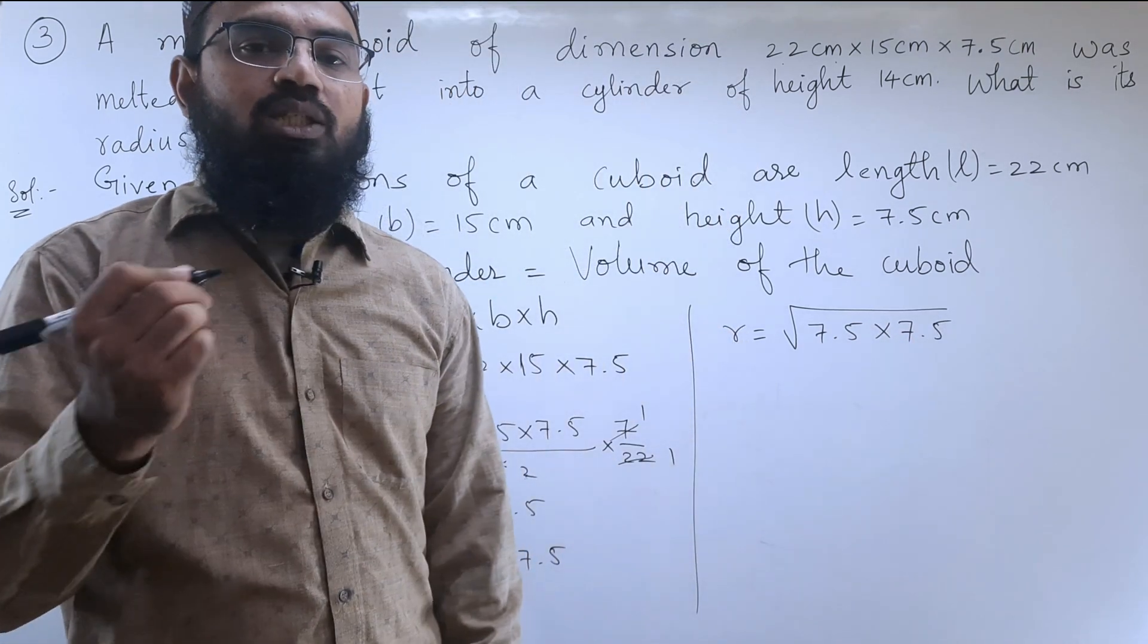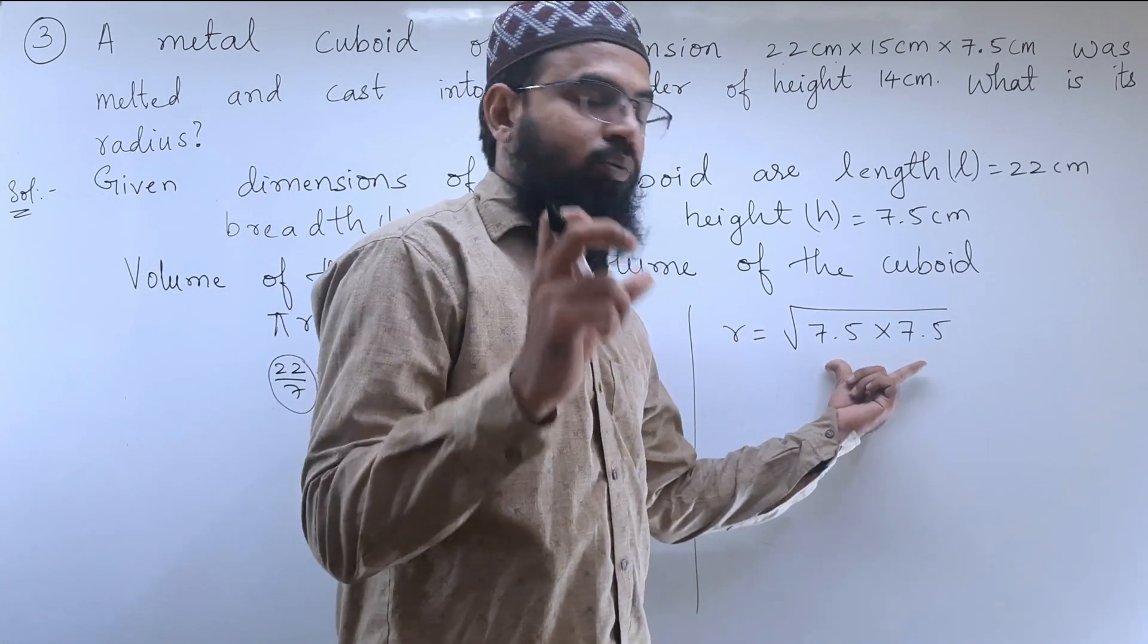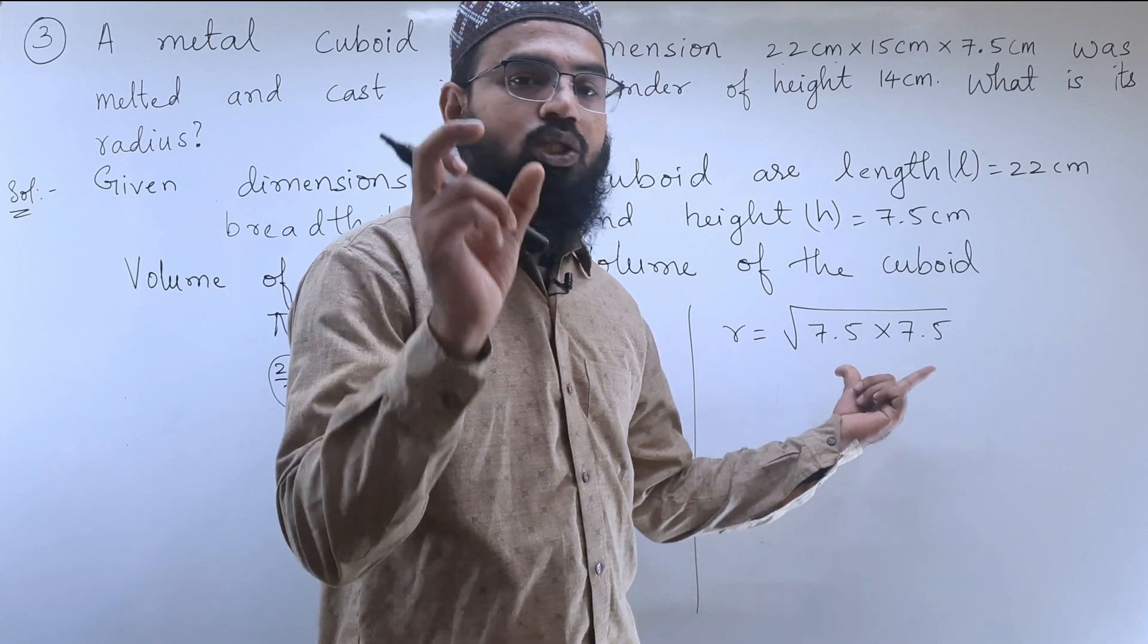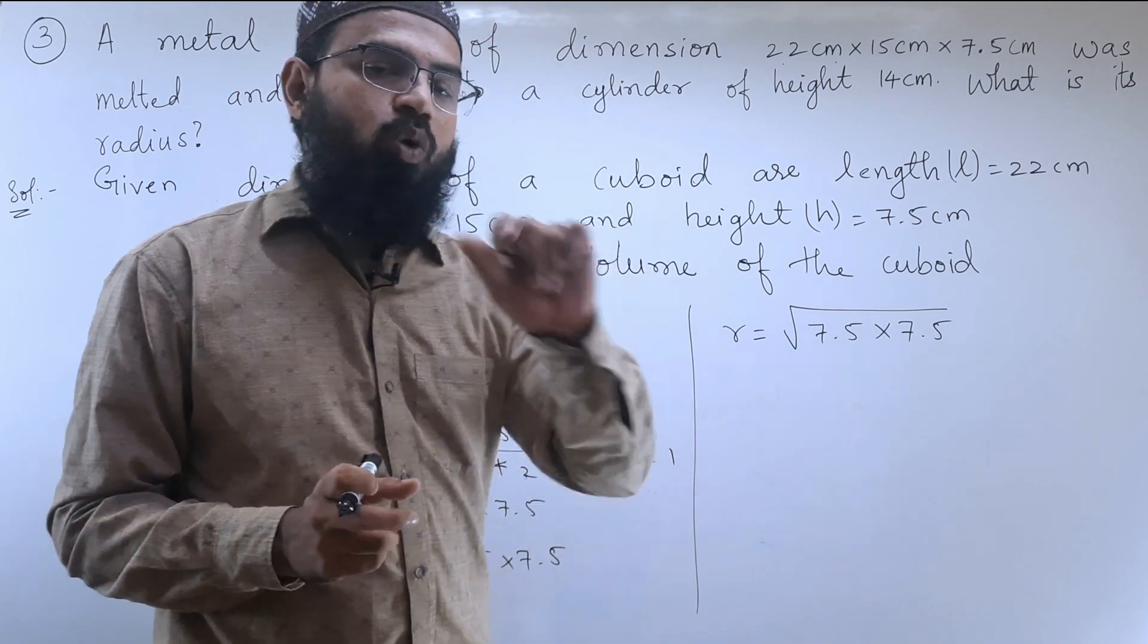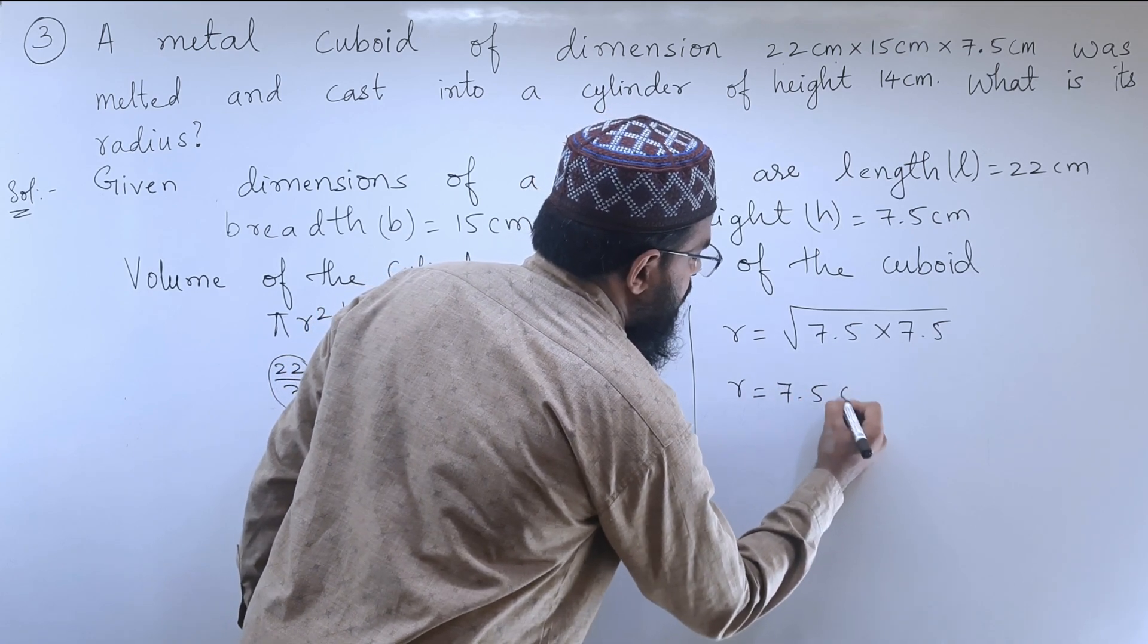To take out the square root, whatever number is present inside, if it is two times, then we will write it once. So R is equal to 7.5 centimeter.